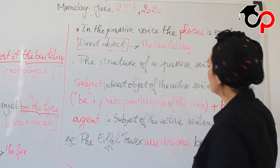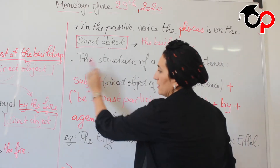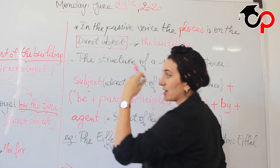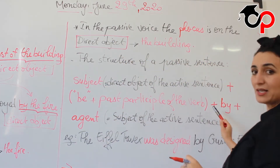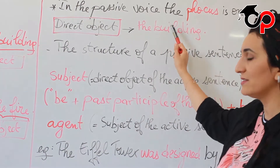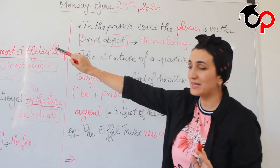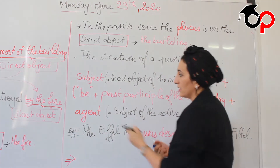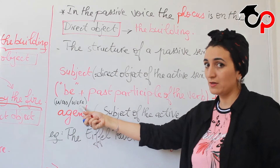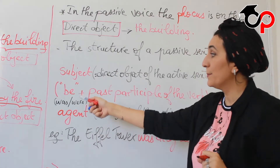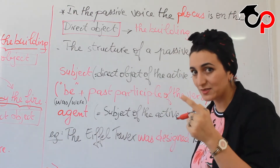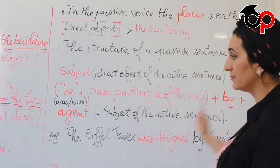The structure of the passive sentence is very simple. The subject, which is the direct object of the active one — the subject is actually the direct object of the active sentence — plus the auxiliary verb 'to be'. In the passive voice, we use 'to be'. Here, talking about the past simple, 'to be' in the past is 'was' or 'were'. Then the past participle of the verb, not the past tense — the past participle. Plus 'by', plus the agent, which is the subject of the active sentence. We change the roles: the subject becomes the object, and the direct object becomes the subject in the passive voice.